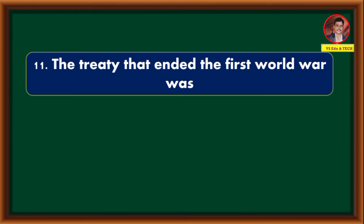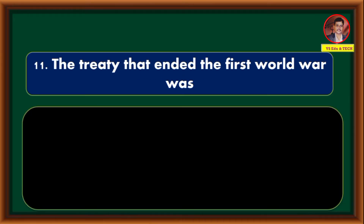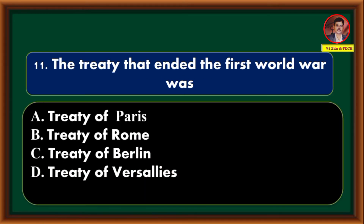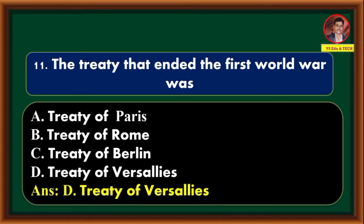The treaty that ended the First World War was — Treaty of Paris; Treaty of Rome; Treaty of Berlin; Treaty of Versailles. Correct answer is option D: Treaty of Versailles.